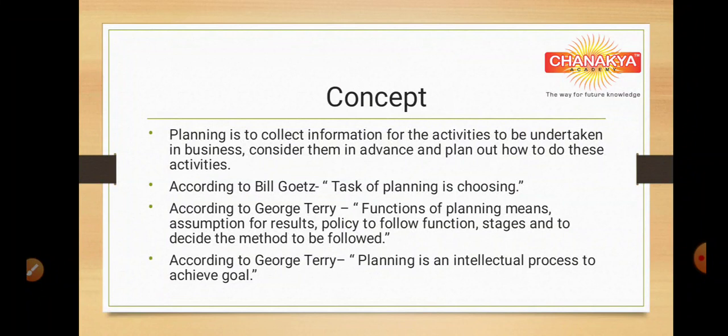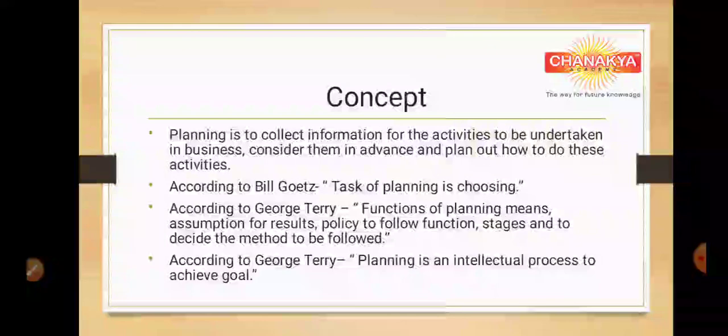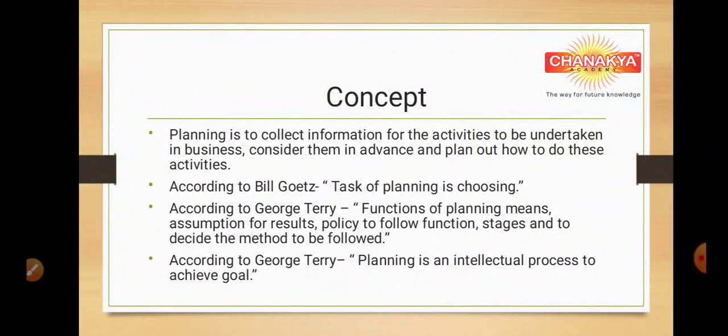Planning is to collect information for activities to be undertaken in business, consider them in advance, and plan how to do these activities. We have two different definitions given by Bill Goetz and George Terry. Bill Goetz says that the task of planning is choosing — planning means selection of targets and tasks. Whereas George Terry defined planning as assumption of result, policy to follow a function, stages, and deciding the method to be followed.